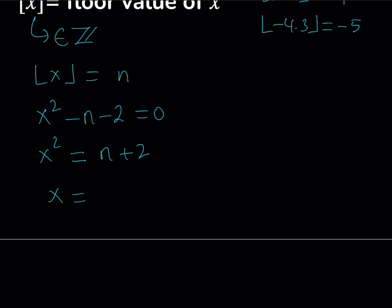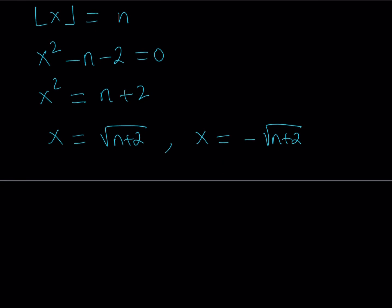The two expressions whose square equals n plus 2 are square root of n plus 2 and its opposite. We also have to notice that n plus 2 needs to be greater than or equal to 0 because we have the radical, which means n needs to be greater than or equal to negative 2. This gives us a lower bound for the n values.